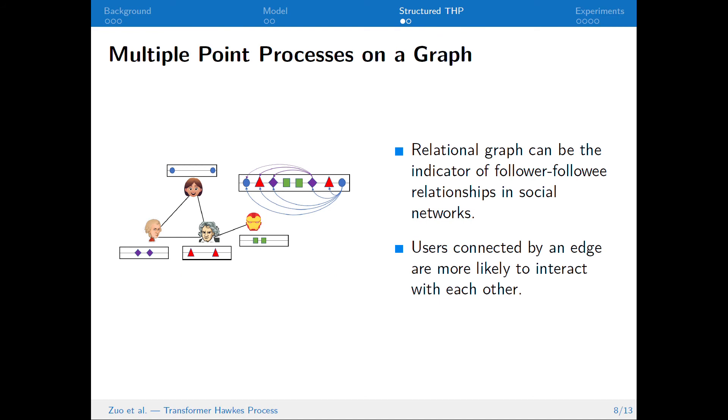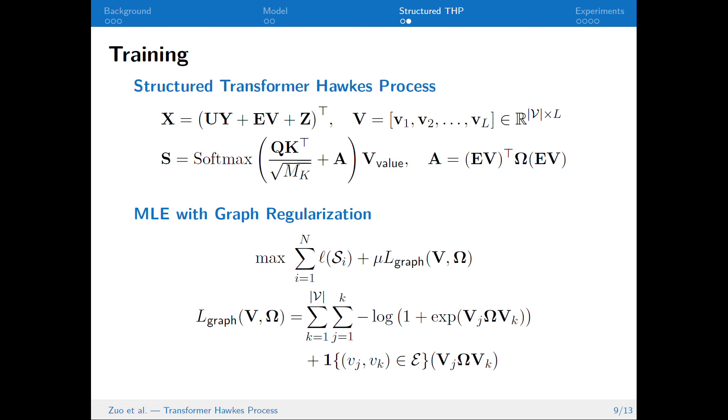Moreover, our method can extend to multiple point processes on a graph, which is a common setting in social networks. Under this setting, a relational graph can be the indicator of follower-followee relationships, where users connected by an edge are more likely to interact with each other. Our goal is to model this kind of behavior. We integrate a vertex similarity matrix into the self-attention module, and we propose a graph regularizer that promotes attention between vertices that are connected.